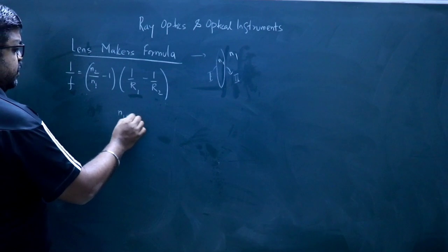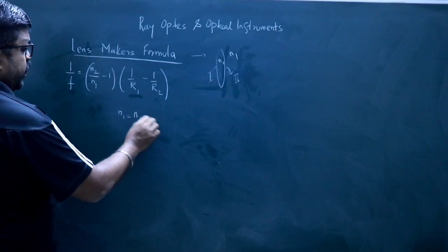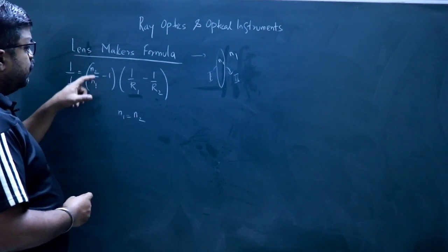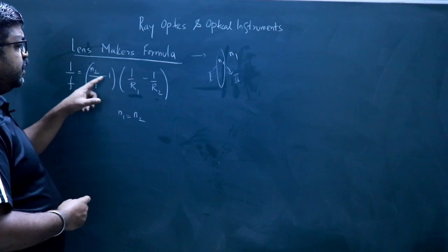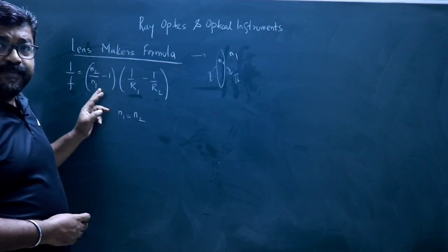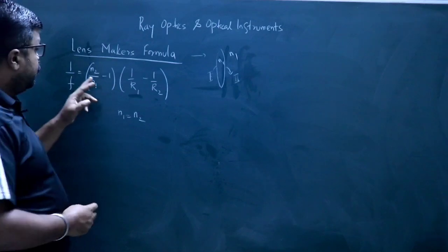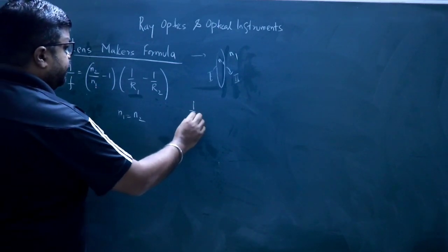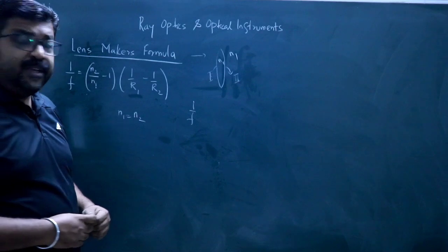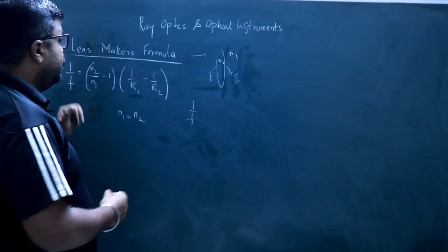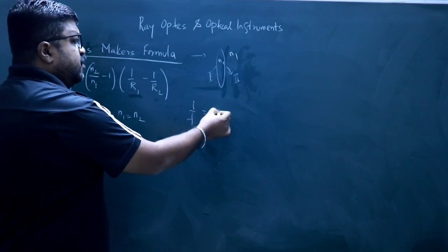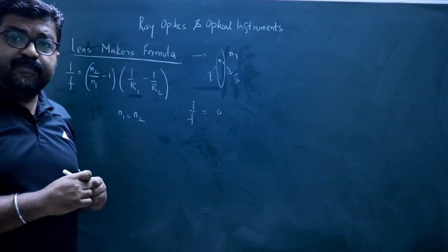If N1 is equal to N2, then the quantity N2/N1 equals 1, so 1 minus 1 is 0. The whole quantity becomes 0, and therefore 1/f equals 0. So the value of 1/f is 0.